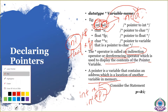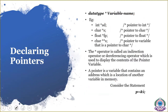So which type of variable address you want to store, the same type of pointer must be declared to store that address. If you want to store the address of an integer variable, declare an integer pointer. If you want to store the address of a float variable, declare a float pointer. If you want to store the address of a character variable, declare a character pointer. By storing the address of a particular variable, we can easily access the variable value without using the variable name.